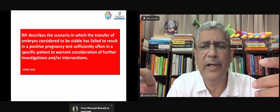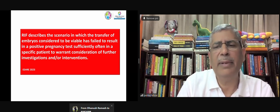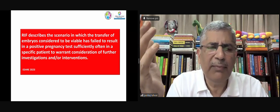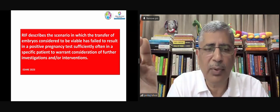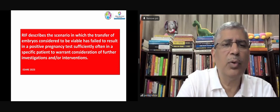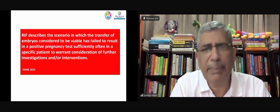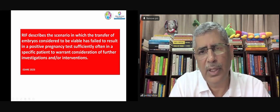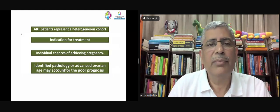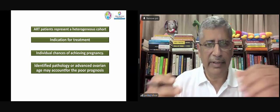Transfer of embryos considered to be viable has failed to result in a positive pregnancy sufficiently often in a patient — they have come out with a new definition. When embryos were good and viable but have not given us a pregnancy, we call it a RIF (Repeated Implantation Failure). They have not specified euploid embryos here. The issue is that we have different definitions and none of them are actually very reliable.